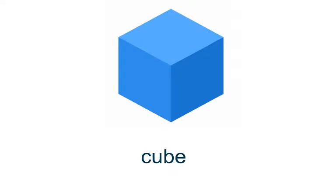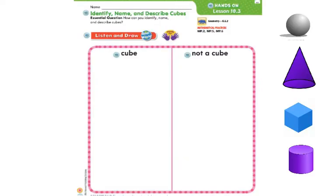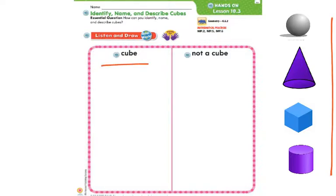Now that we have an idea of what a cube is like, let's move on. We are going to identify, name, and describe the cube, which we have started already. So what we're going to do on this page is sort your shapes. Which ones are cubes and which ones are not cubes?